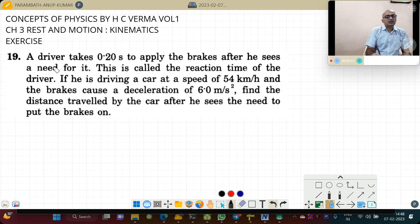Here you see that a driver takes 0.2 seconds to apply the brakes after he sees a need for it. This is called reaction time of the driver. If he is driving a car at a speed of 54 km per hour and the brakes cause a deceleration of 6 m per second square, find the distance travelled by the car after he sees the need to put the brakes on.